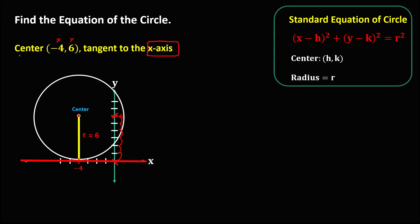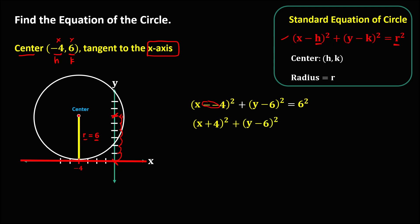Since we now have the center and the radius, we can find the standard equation of the circle. We have x minus h, where h is negative 4, quantity squared, plus y minus k, k is positive 6, quantity squared, equals r squared, and r is 6, so this is 6 squared. Simplifying, the double negative becomes positive, so plus 4 quantity squared, plus the quantity of y minus 6 to the power 2, equals 6 squared, which is 36. This is the standard equation of the circle.